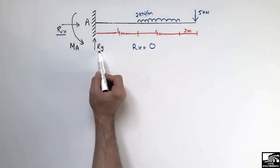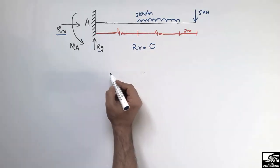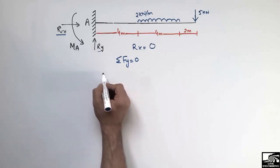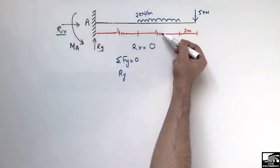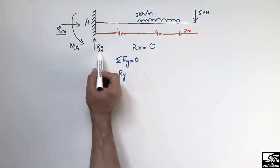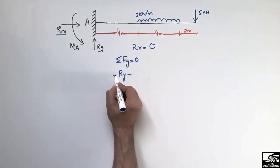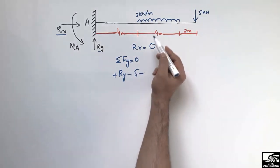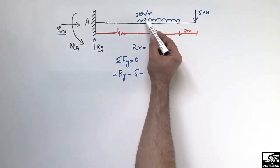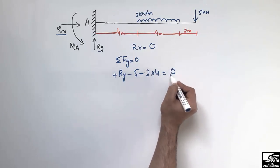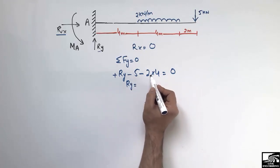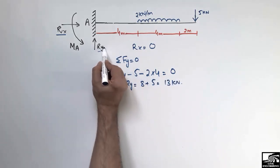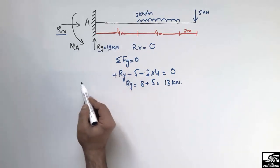There are vertical loads, so we need to find support reaction Ry. Taking summation of Fy equal to zero: Ry acts upward (positive) while all other loads act downward (negative). So Ry minus 5 minus (2 × 4) equals zero. Ry equals 5 plus 8, which gives us Ry equal to 13 kN.